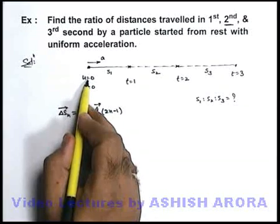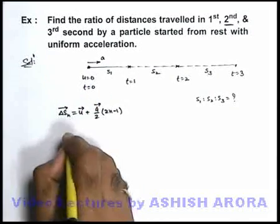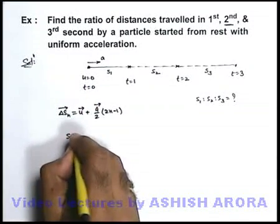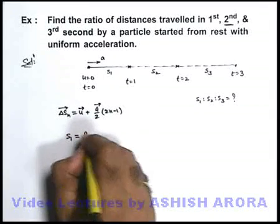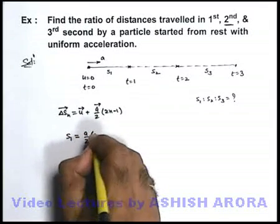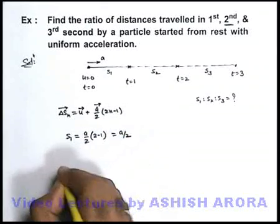So here our initial velocity is zero, so we can directly calculate the distance travelled in the first second of motion as (a/2)(2-1), so its value is a/2 only.